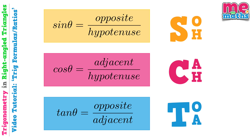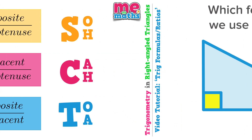Now as you may notice, these three trig formulas work with different combinations of sides, and that means we use a different one depending on the problem we're working on. And that's what we're going to look at now — just a couple of examples of how we decide which of these formulas we need to use.